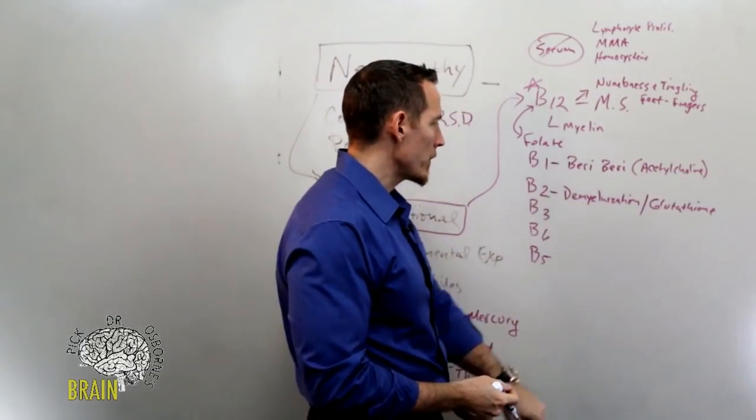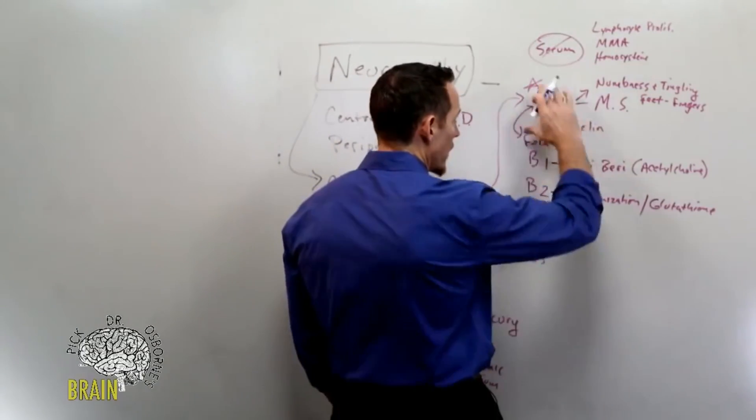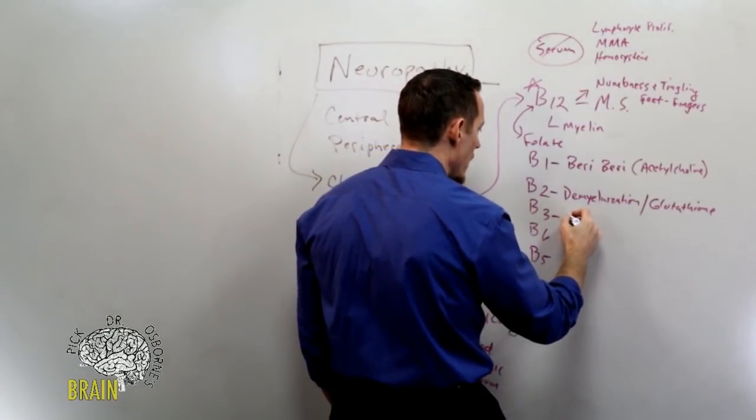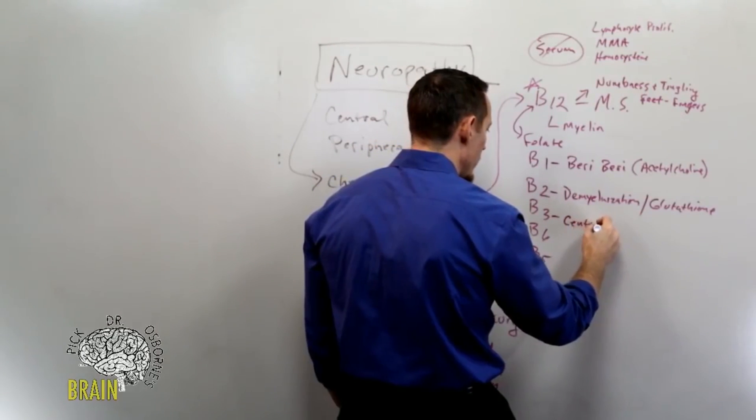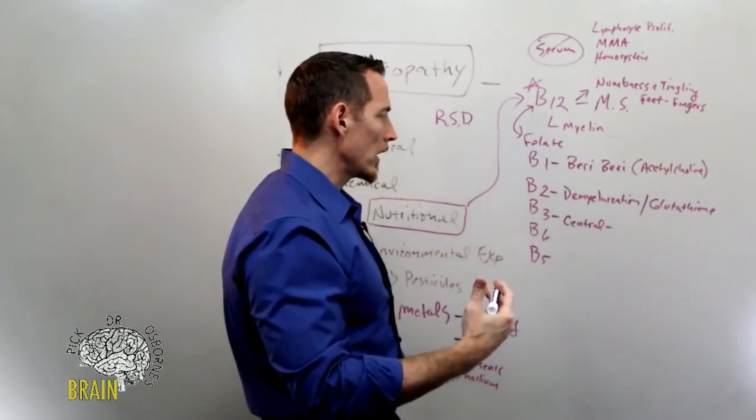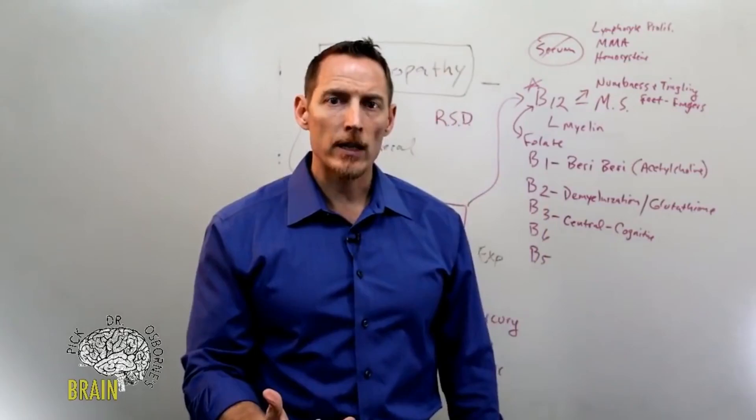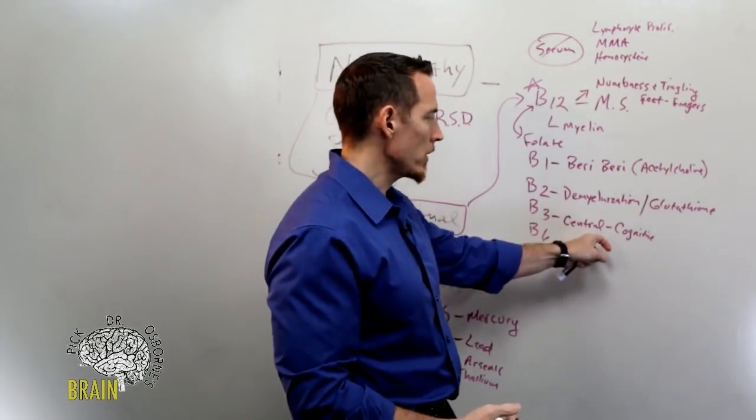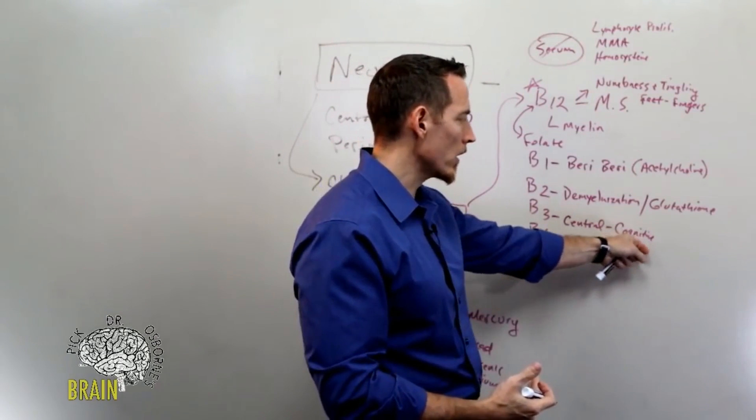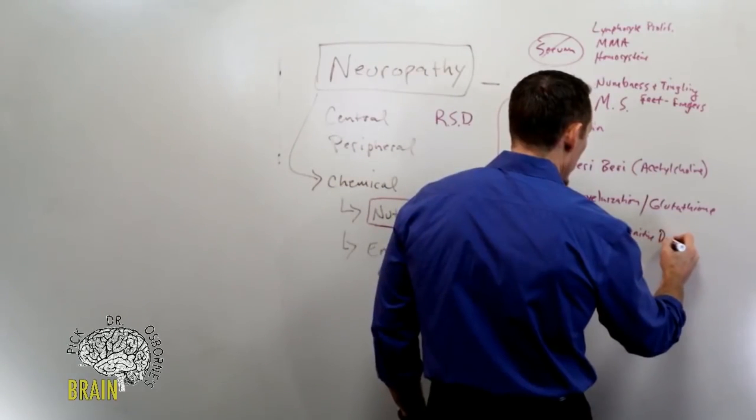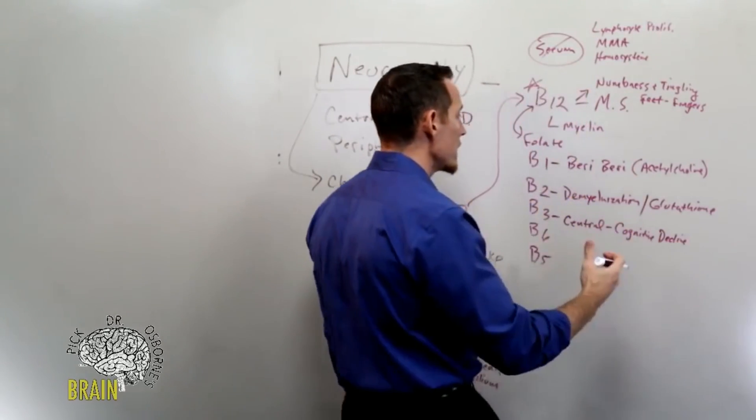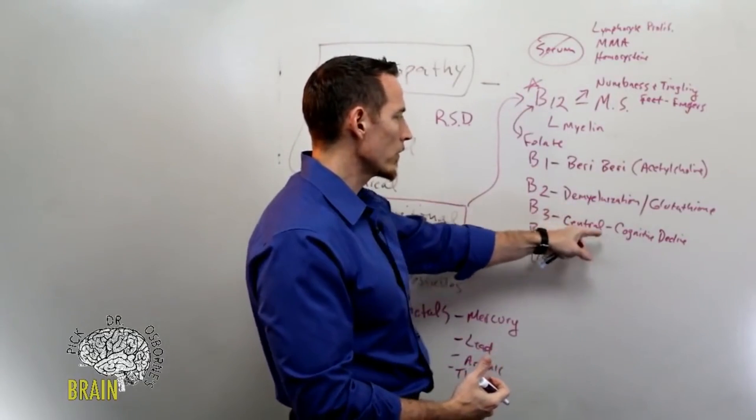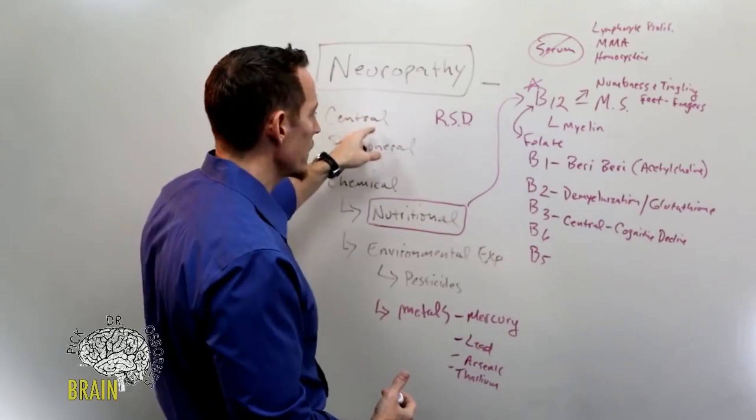Now B3 generally doesn't cause this type of neuropathy. B3 deficiency, we'll call it more of a central problem because it leads to cognitive decline, right? So cognitive function versus numbness, tingling and that kind of thing. You might get memory problems or word recall issues. Dementia is a late stage pellagra, which is what vitamin B3 deficiency is called. It causes cognitive decline, and that's a form of neuropathy too. Sometimes when we're talking about neuropathy, we're talking about pain and numbness and tingling, but this is also a form of centralized neuropathy. Remember I said central and peripheral neuropathy, this is a form of central neuropathy.